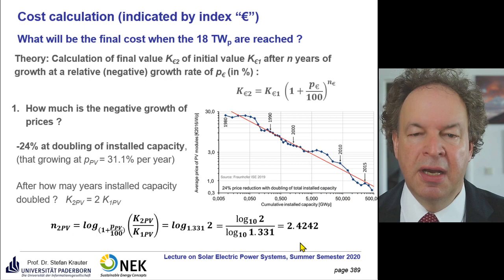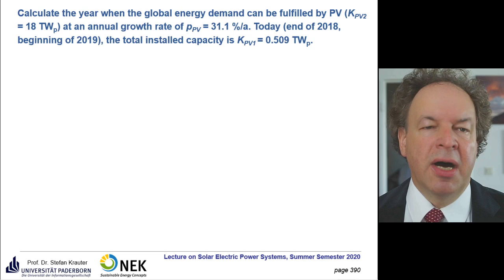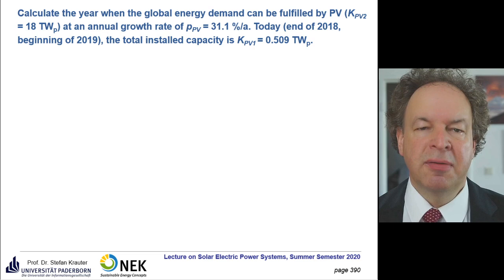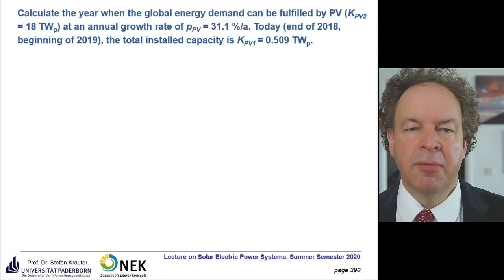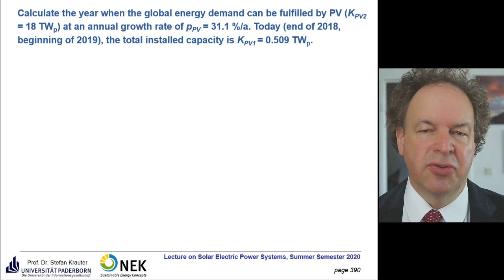The doubling time is not constant as you see on the graph, but we take the last 6 years as a base and use this growth rate. Now we want to know the year when the global energy demand — not only electricity demand but total energy, including mobility and heating — can be fulfilled by PV. We have the annual growth rate of 31%.